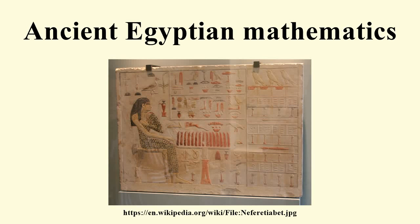Ancient Egyptian mathematics is the mathematics that was developed and used in ancient Egypt c. 3000 to c. 300 BC. Written evidence of the use of mathematics dates back to at least 3000 BC, with the ivory labels found at Abydos. These labels appear to have been used as tags for grave goods, and some are inscribed with numbers.